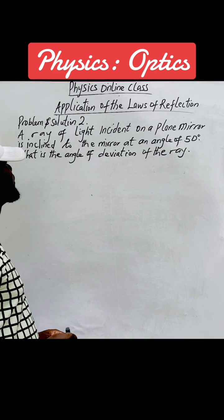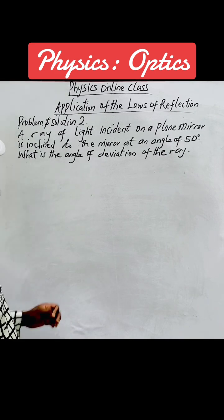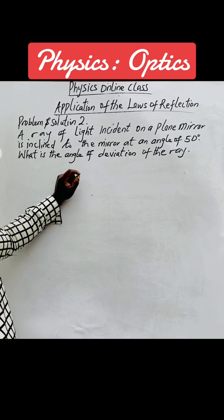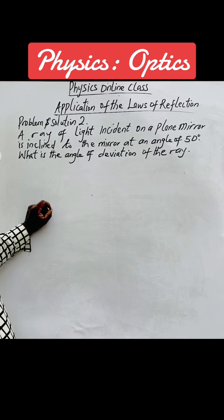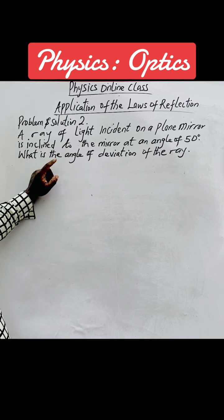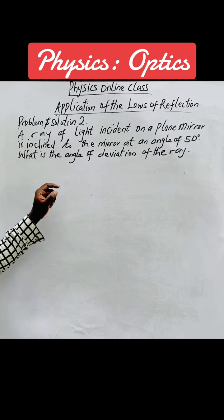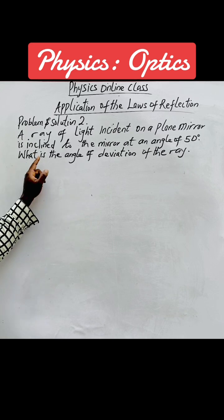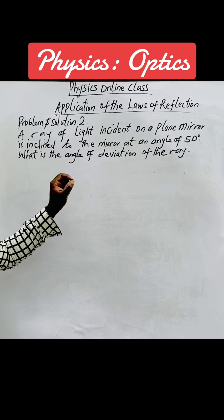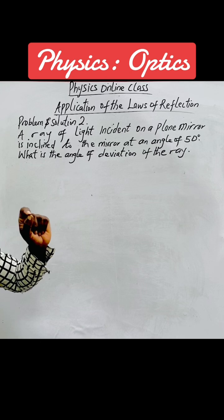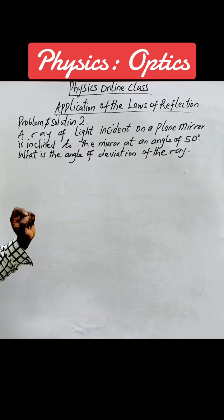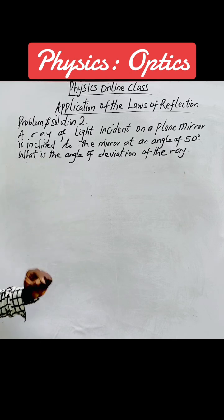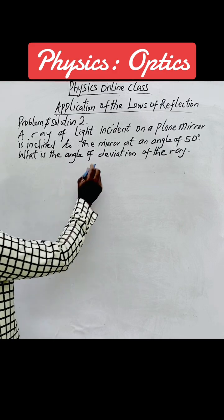Alright, great viewers, let's go on our application of the laws of reflection. This question says: a ray of light incident on a plane mirror is inclined to the mirror at an angle of 50 degrees. What is the angle of deviation of the ray? Let's go quickly to the solution.